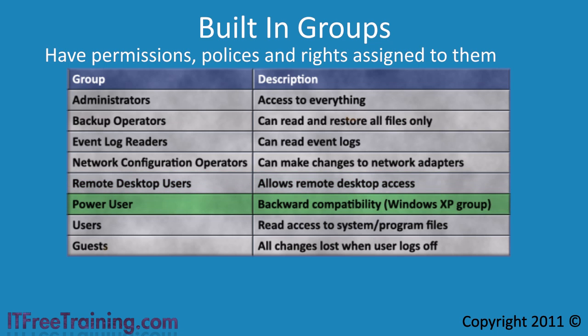The next group is the power users group. This group was present in Windows XP and later removed in Windows Vista, but in Windows 7 it has returned for backward compatibility. It is recommended that you do not use this group. It is designed to give more rights than the users group but less than the administrator. The problem is that users also get access to certain system files and settings they should not have. In Windows XP it was common practice to add users to this group to get software to work, but with Windows 7 you should try other compatibility options and only add users to the power users group as a last resort.